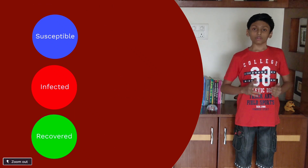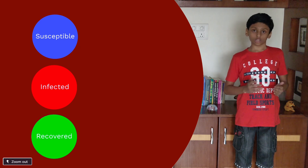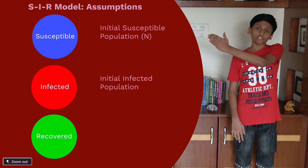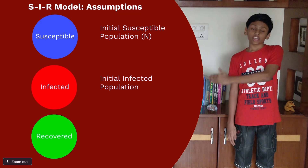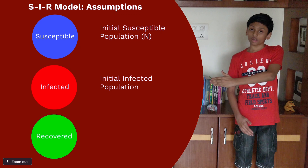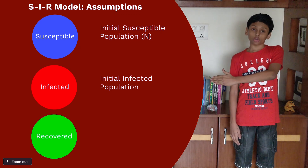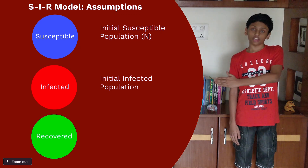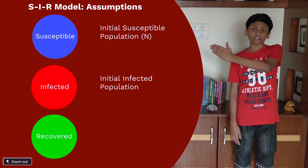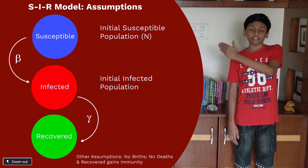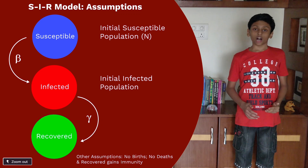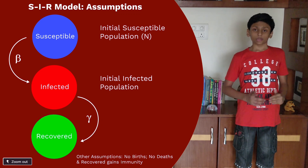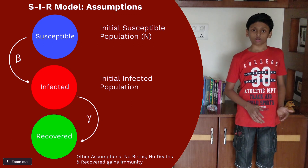Now let's start modeling. Whenever we have to model a pandemic, we have a few assumptions to start with. The initial susceptible population could be the population of a city or a country where the outbreak occurs. The initial infected population is, say, 1 if there is one infected person on day 1 of the pandemic. The infection rate per unit time is beta and the recovery rate per unit time is gamma. The values of beta and gamma are determined from data collected in past outbreaks or from the current outbreak.